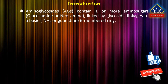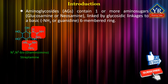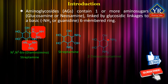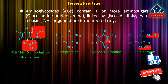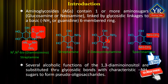The aminoglycosides each contain one or more amino sugars linked by glycosidic linkages to a basic six-membered carbon ring. The amino sugars present in the aminoglycosides may be Glucosamine or Neosamine and usually the basic group is either Amino or Guanidine group. They contain a 1,3-diaminoinositol moiety consisting either of streptamine, 2-deoxystreptamine or spectinamine. Several of the alcoholic functions of the 1,3-diaminoinositol are substituted through glycosidic linkages with characteristic amino sugars to form pseudo-oligosaccharides.